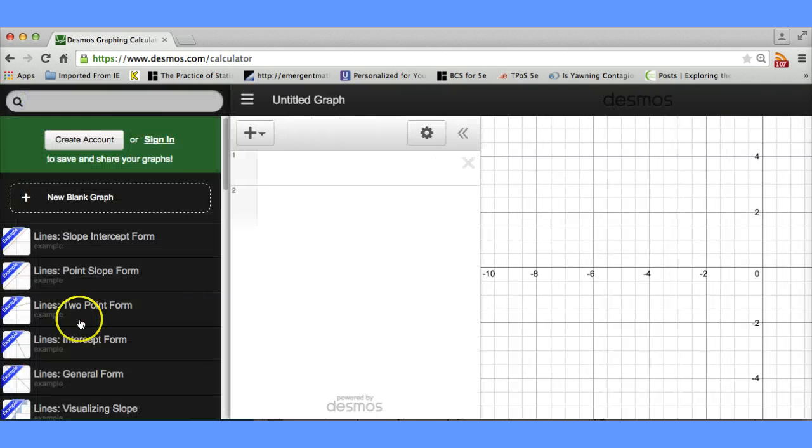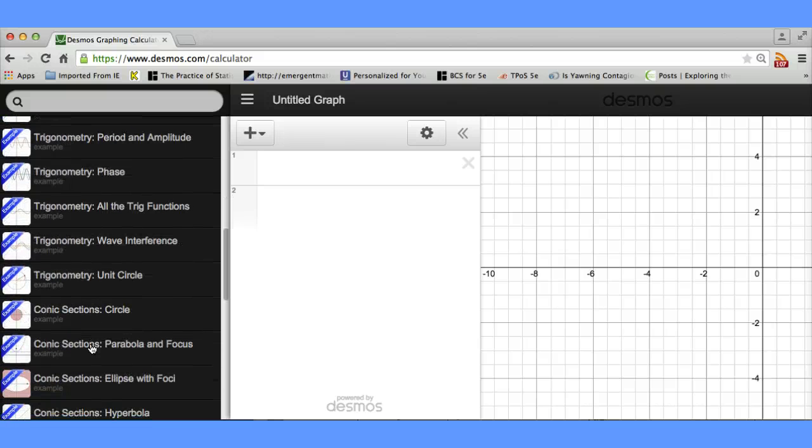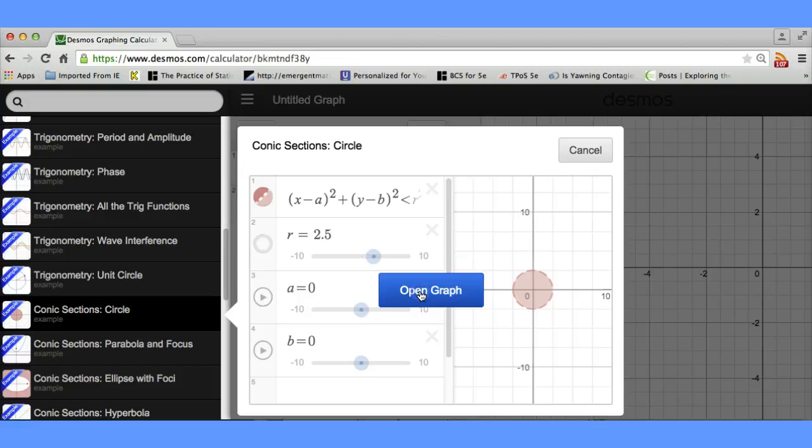I'm going to see if Desmos has anything related to circles for us here in their list of examples. It appears that they do. Let's open this graph.